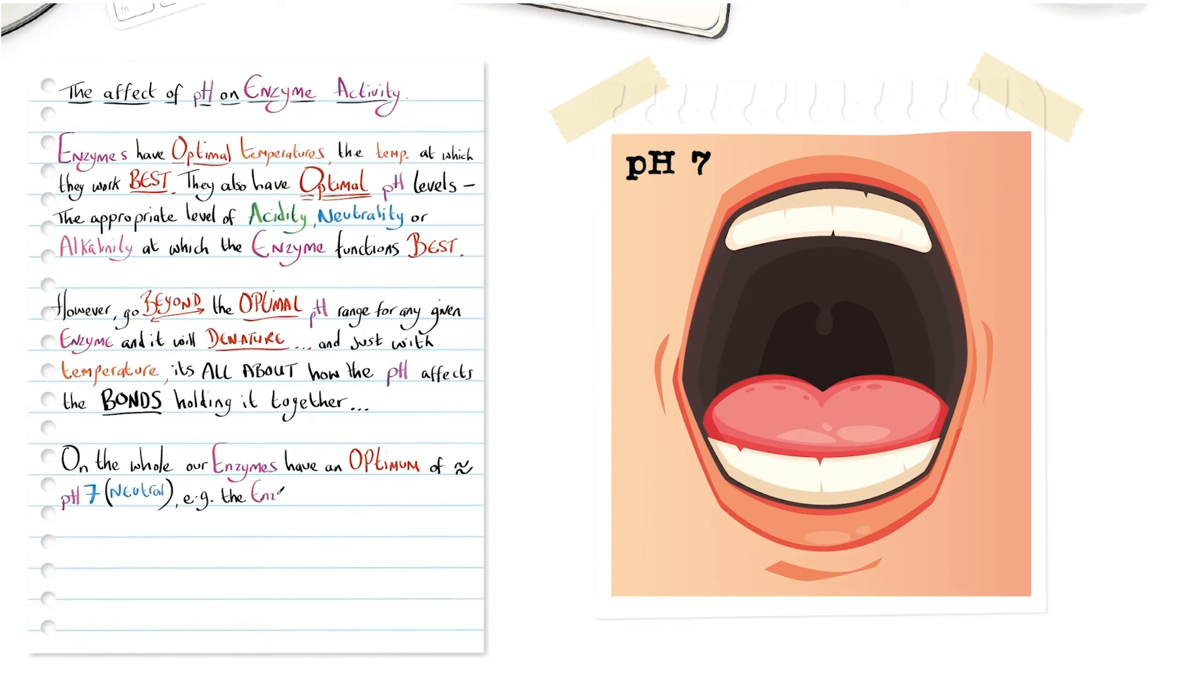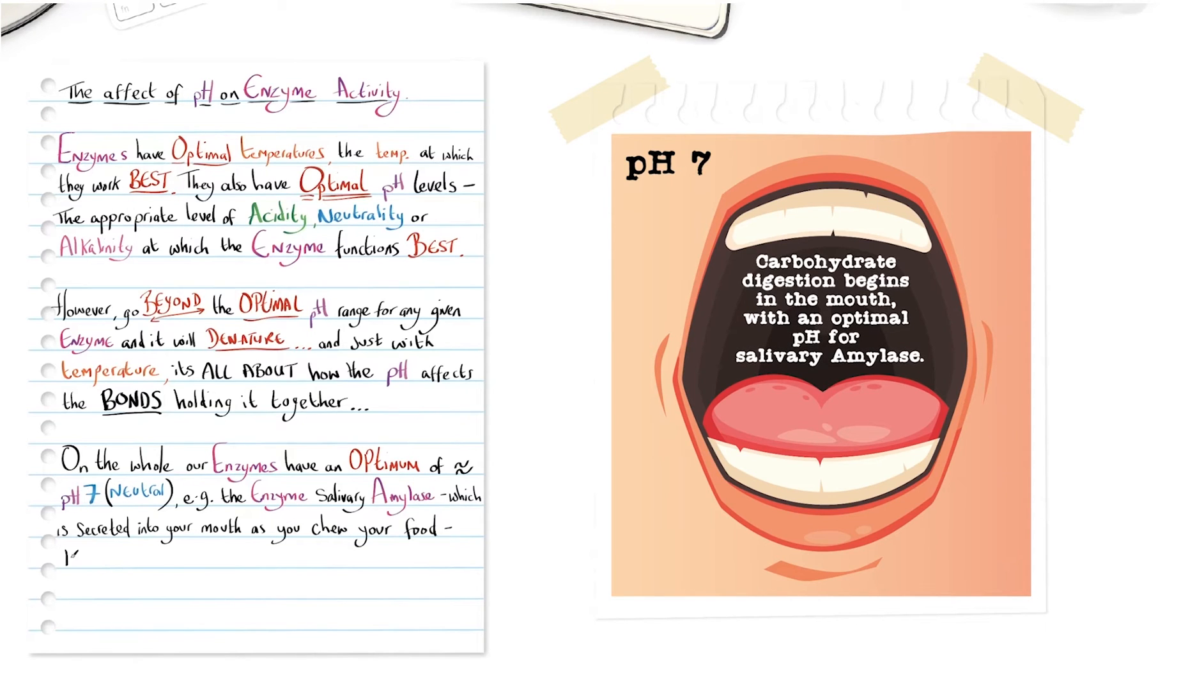For example, the enzyme salivary amylase, which is secreted into your mouth as you chew your food and its job is to begin the breakdown of carbohydrate, has an optimum pH of 7. So a pH too far above or below this will denature it.